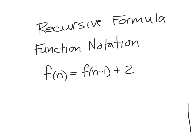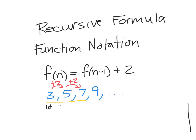For example, take the sequence 3, 5, 7, 9. To read a sequence you must have at least three numbers. This sequence fits this recursive notation because each time we're going up by two. The number 3 is the first term, 5 is the second term, 7 is the third term, and 9 is the fourth term.